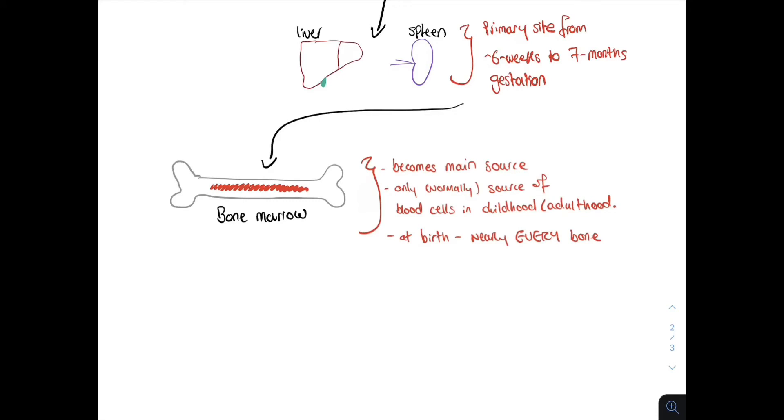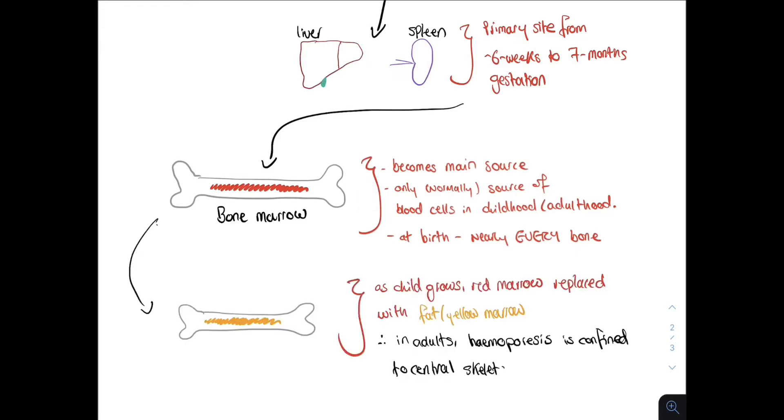In children and adults, in normal circumstances, it is the only site for hematopoiesis. At birth, hematopoiesis is present in nearly every bone. However, as the child grows, the active red marrow is gradually replaced by fat or yellow marrow. And as such in adults, hematopoiesis becomes confined to the central skeleton and proximal ends of long bones.